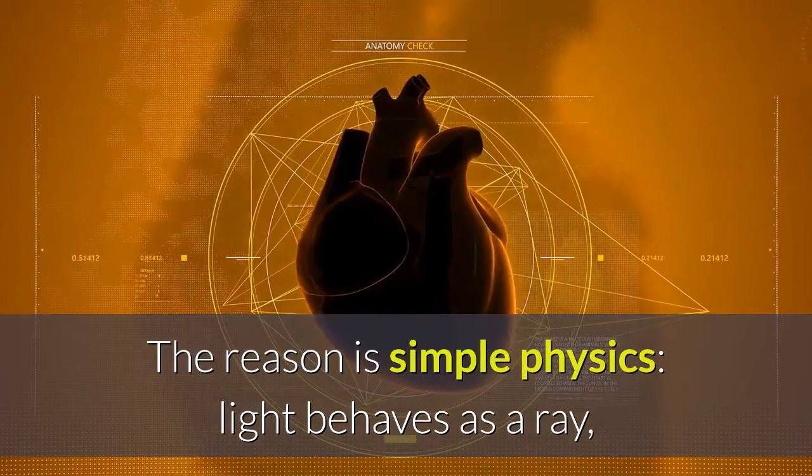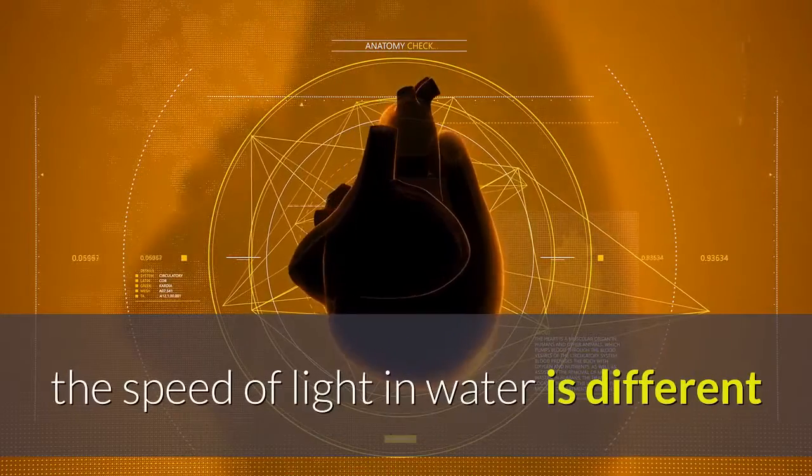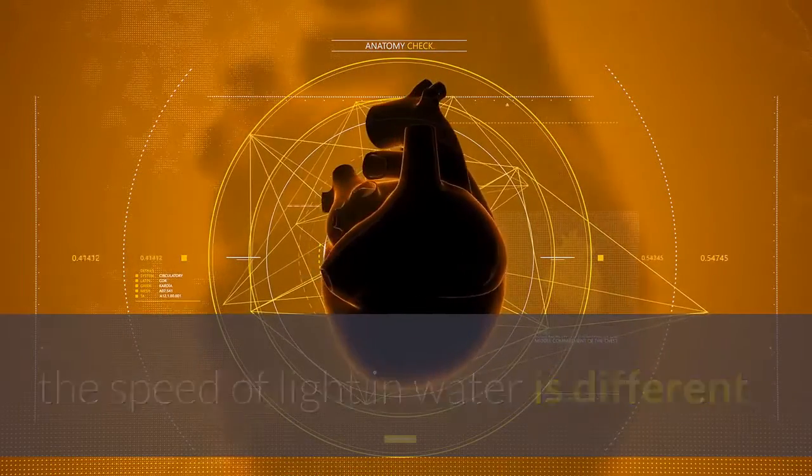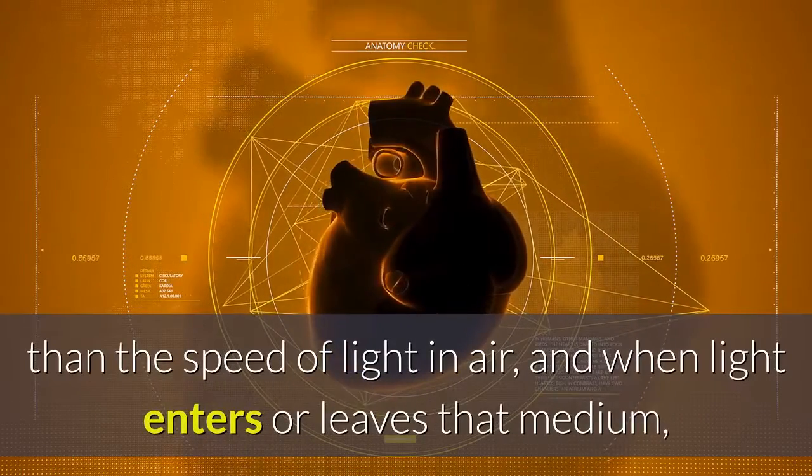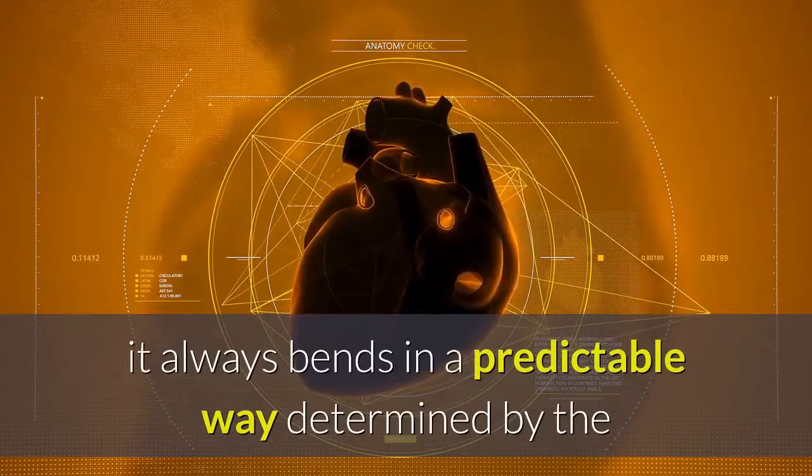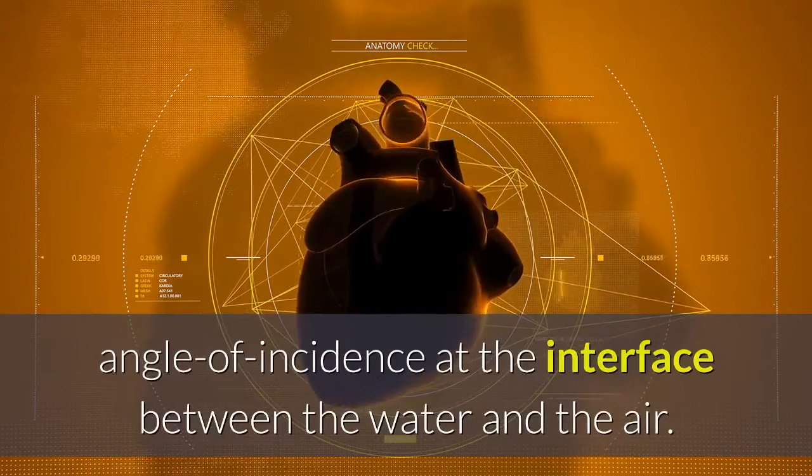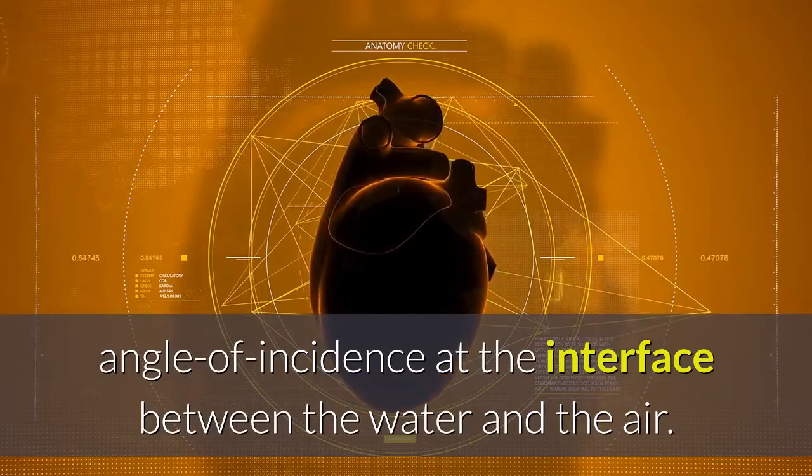The reason is simple physics. Light behaves as a ray, the speed of light in water is different than the speed of light in air, and when light enters or leaves that medium, it always bends in a predictable way determined by the angle of incidence at the interface between the water and the air.